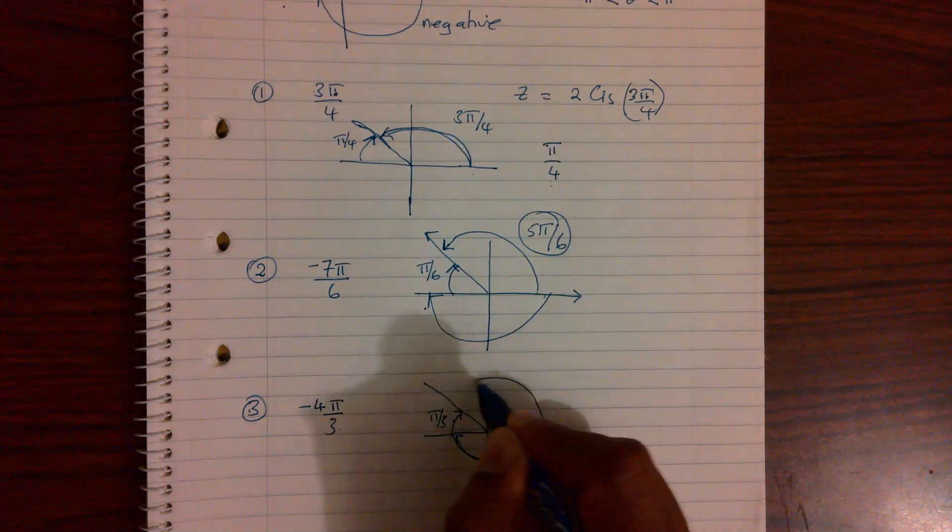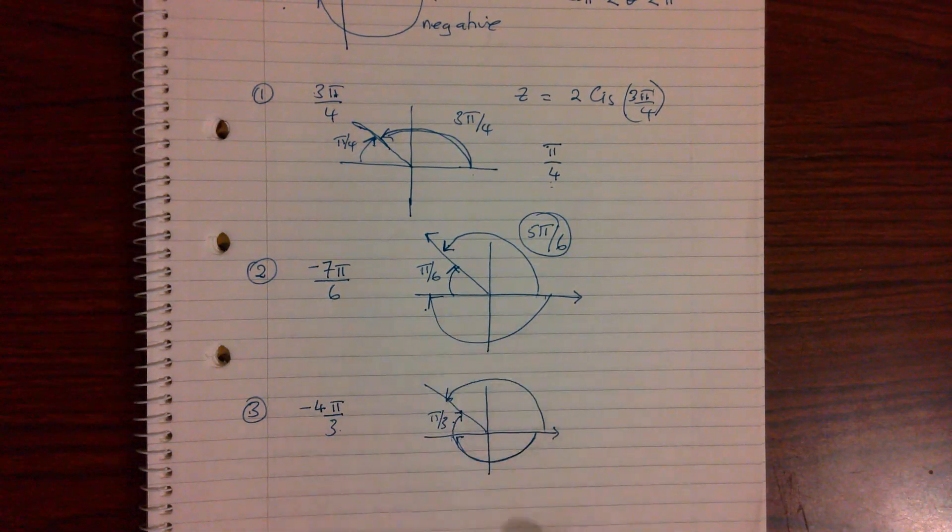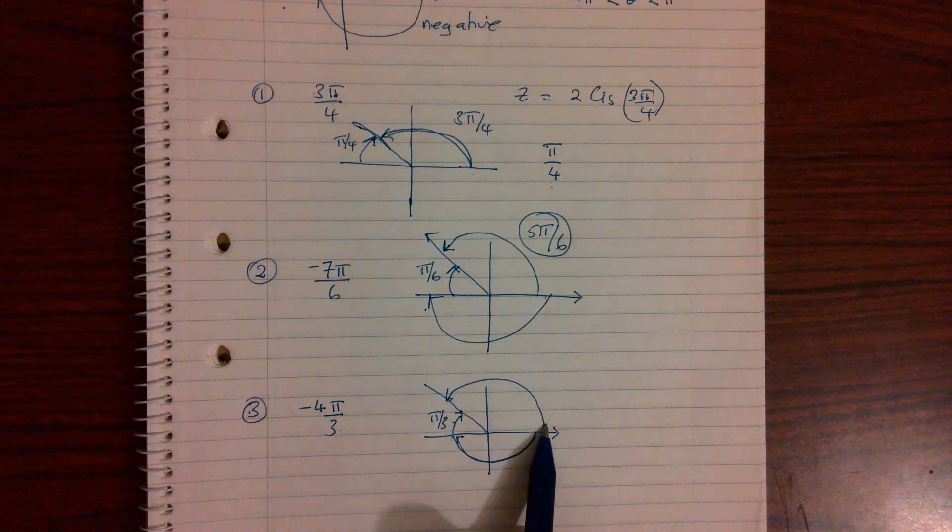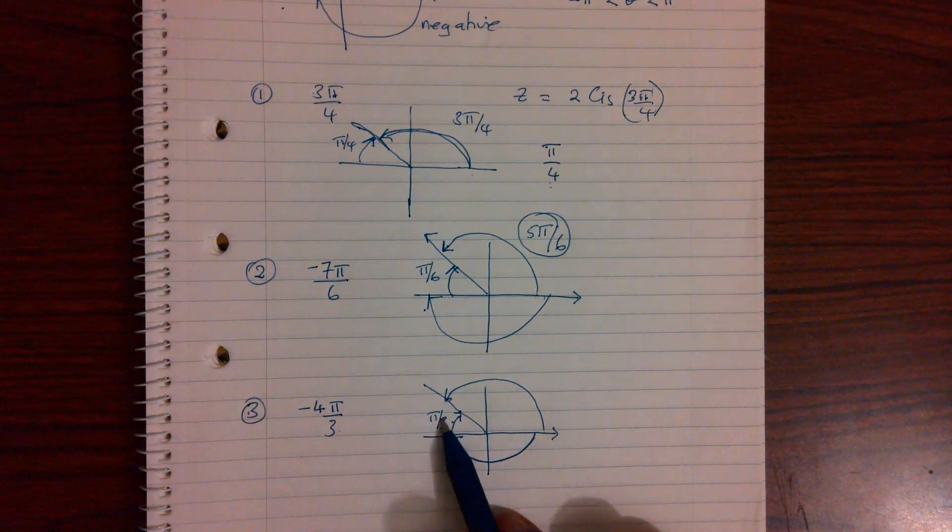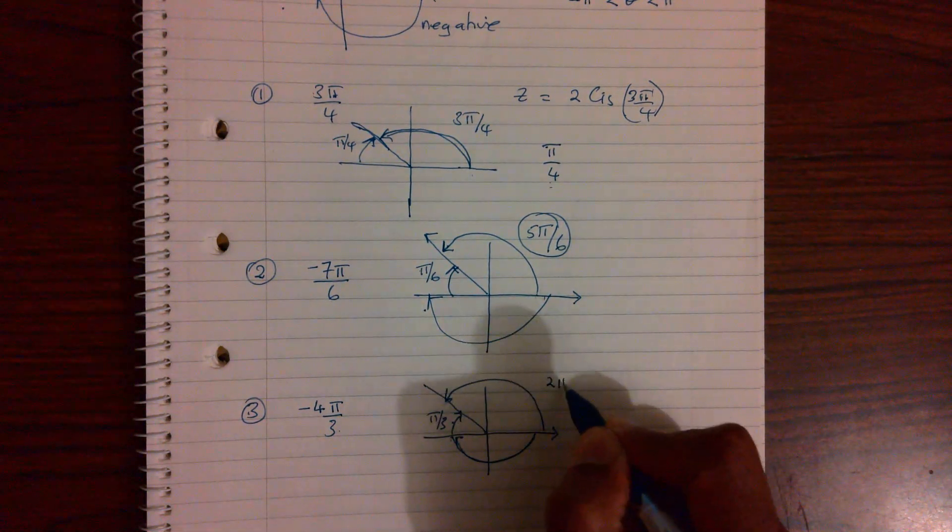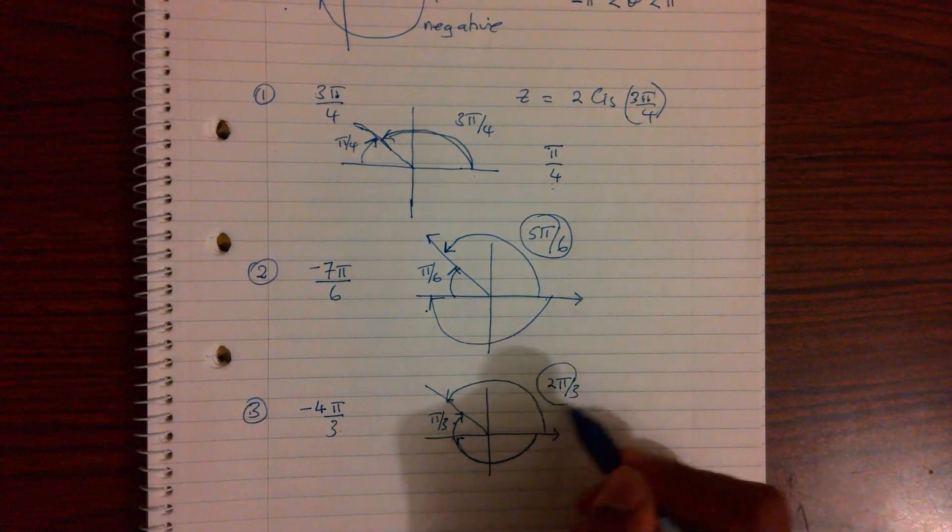So this negative angle, that becomes my argument. And because this is 3 pieces, I've got one piece here, that should be 2. So you'll have 2π over 3. And that becomes your argument.